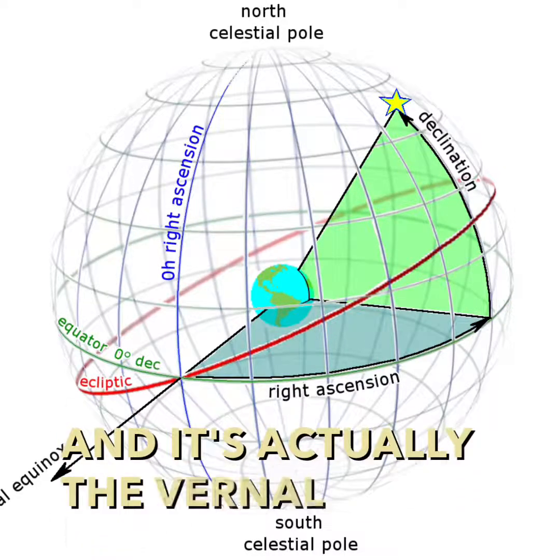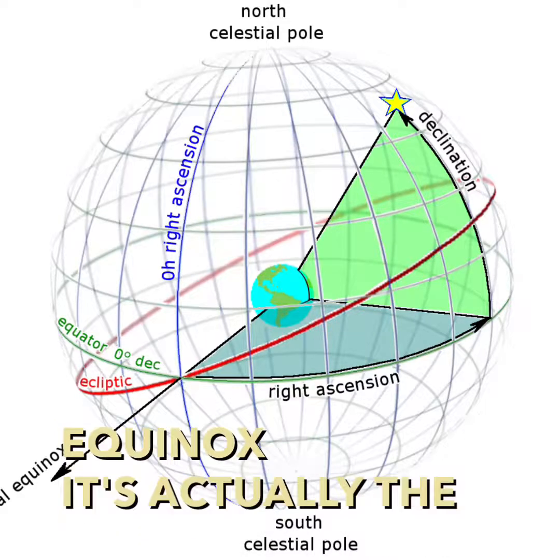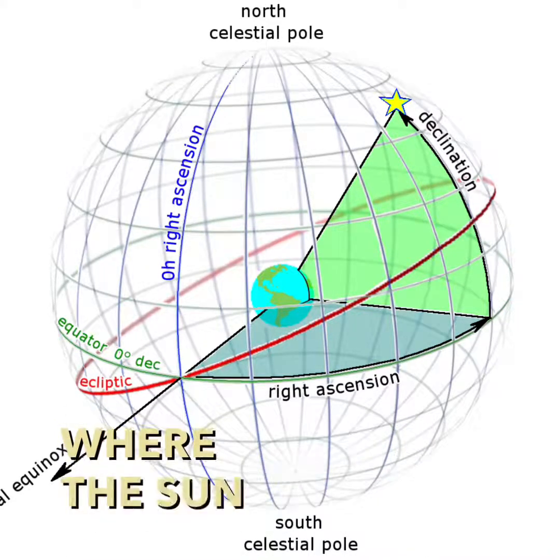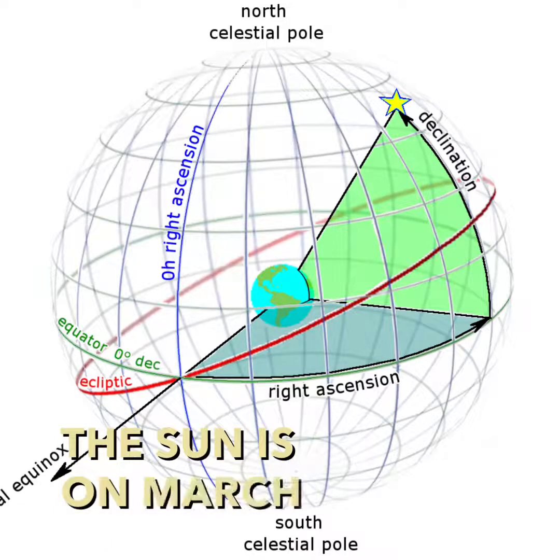And it's actually the vernal equinox. It's actually the spring equinox. So it's where the Sun is on March 21st.